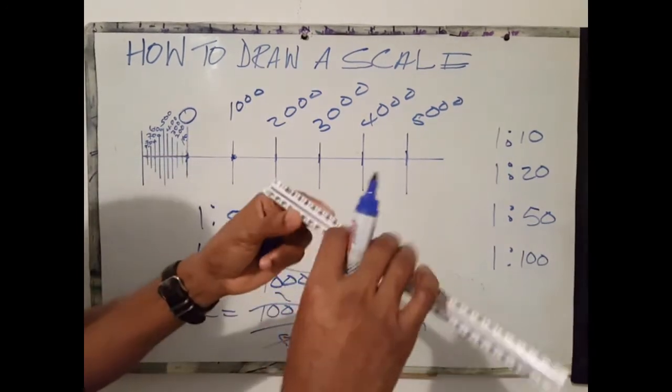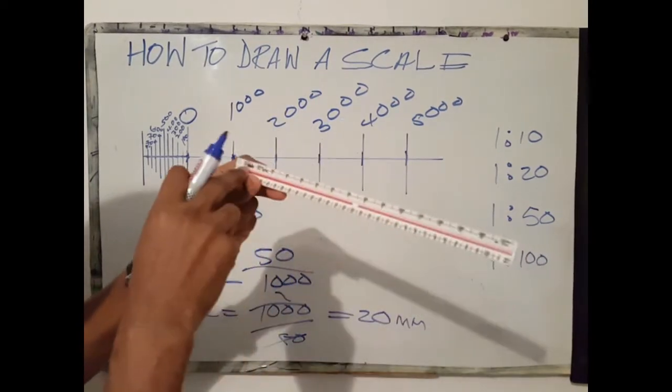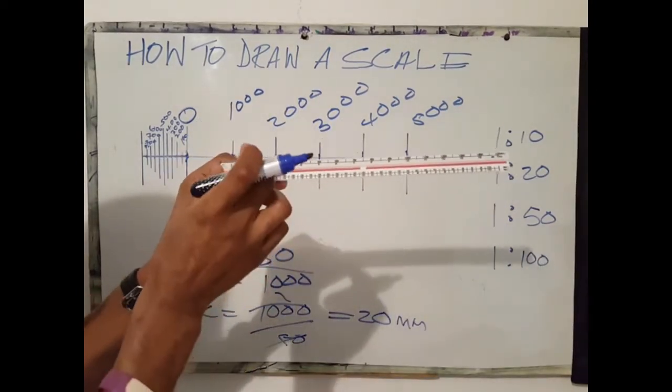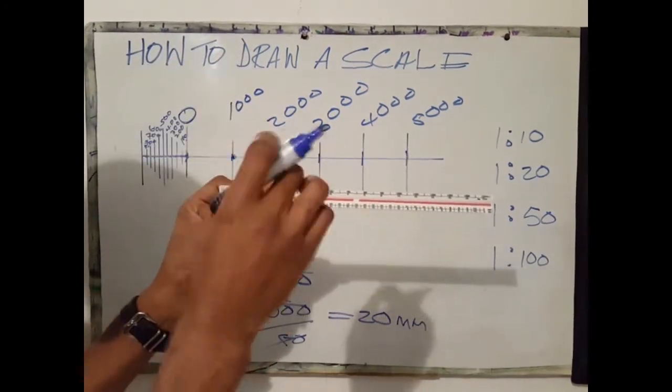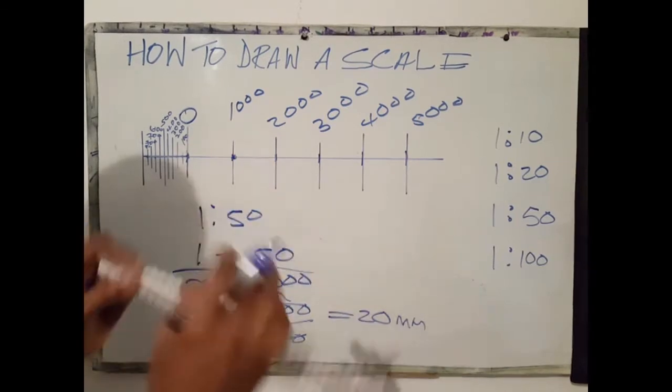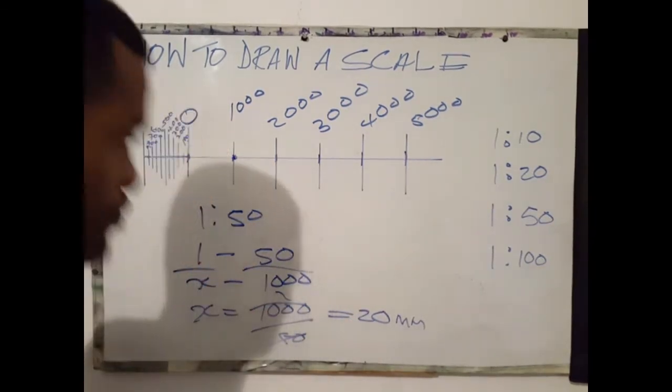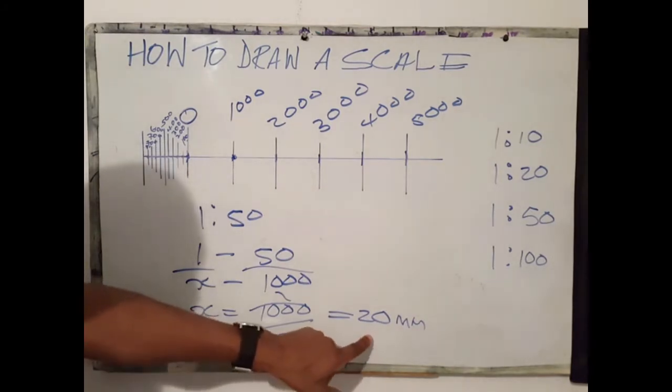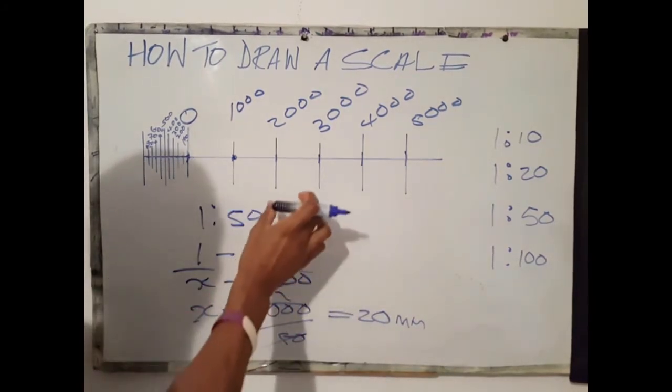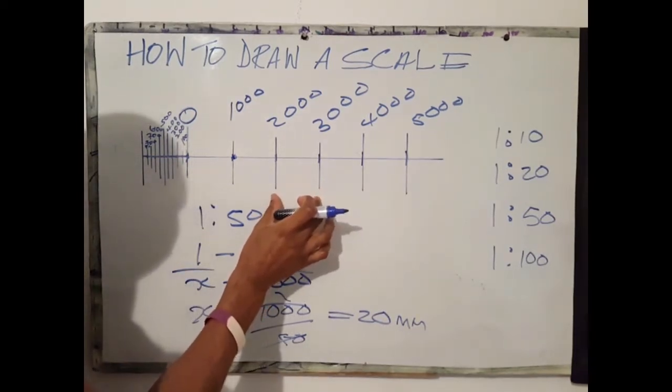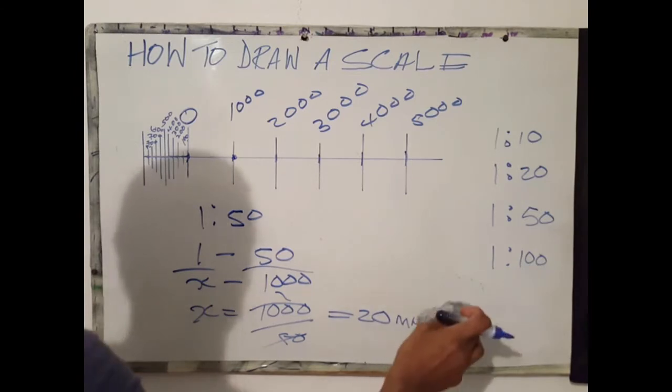No matter where you go, if you check this ruler on a 1 to 50 scale, you will notice that between each 1000 mm it measures 20 mm. So let us draw our scale. Now that we know that 20 mm is the increment or hash mark that we use on a 1 to 50 scale, let's get going.